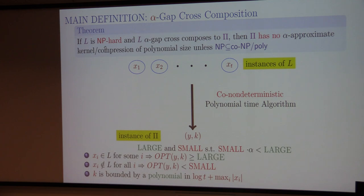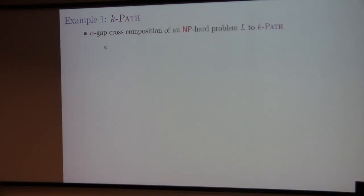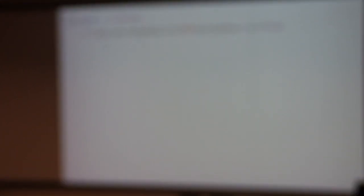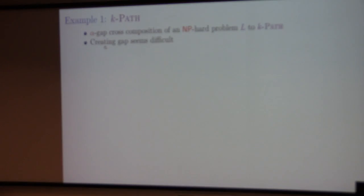Let's see the first example: k-path. In the parameterized maximization version, the question is: if there is a path of length at least k, can we output a path of length at least k/alpha? Creating a gap in this construction seems difficult. I want to start with instances of an NP-hard problem and create an instance of k-path where there is a gap — either the optimum is large or it is too small. The tricky part is we can start with an NP-hard problem where a gap already exists.